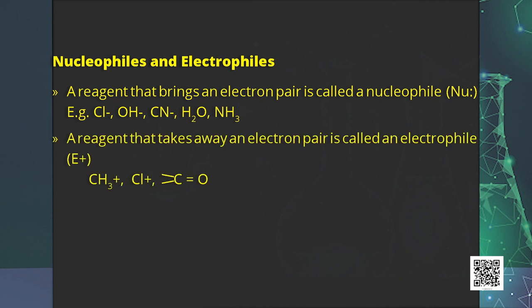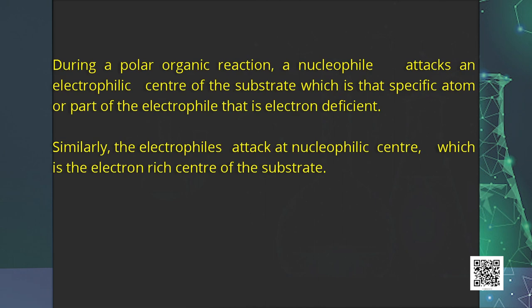A reagent that takes away an electron pair is called an electrophile. Electrophiles may be positively charged or neutral species. For example, methyl carbocation, chloronium ion, and nitronium ion are positively charged electrophiles, while the carbonyl functional group, boron trifluoride, and sulfur trifluoride are neutral electrophiles. During a polar organic reaction, a nucleophile attacks an electrophilic centre — for example, in a carbonyl group, a nucleophile attacks the carbonyl carbon.